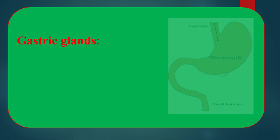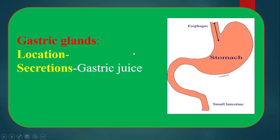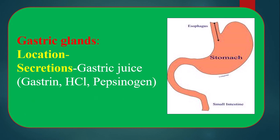Gastric glands: the inner layer of the stomach carries a huge amount of tiny glands which are called gastric glands. These gastric glands secrete gastric juice, which contains gastrin, hydrochloric acid, pepsinogen, and other substances.